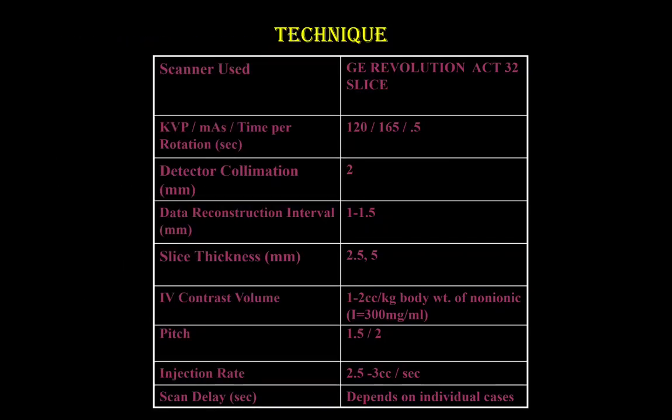The scanner used was GE Revolution ACT 32-slice. Standard KVP of 120 and MAS of 165. The detector collimation was 2 mm, slice thickness was kept around 2.5 to 5 mm, IV contrast volume was around 1.2 cc per kg, and the concentration was around 300 mg per ml.